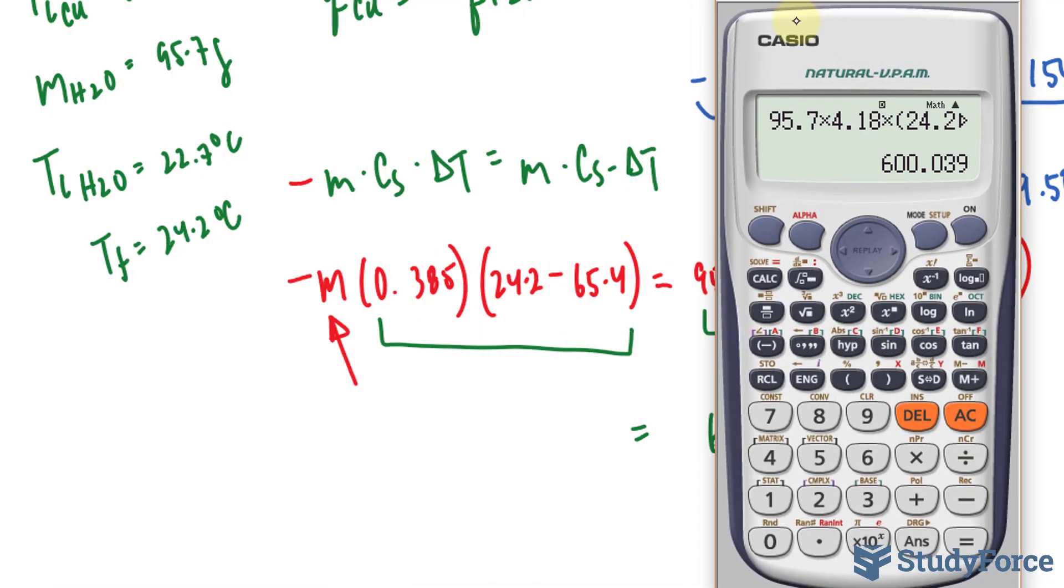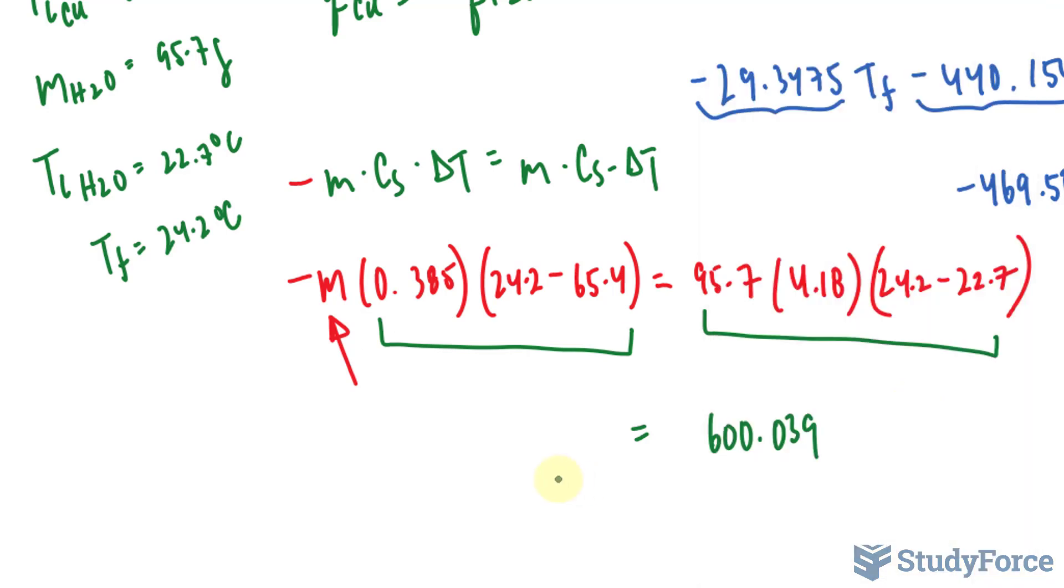Again, using our calculator for these two factors. 0.385 times, in brackets, 24.2 minus 65.4. And at this stage, you can multiply this number by this negative out here too, and that's a good idea, moving forward. This gives us 15.862.